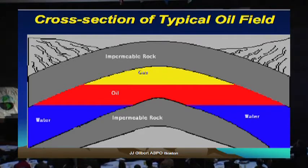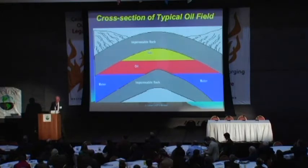The oil that's there has generally not been formed in the reservoir itself. It's been formed some distance away — 10, 20, maybe 50 miles away. It's formed from the decomposition of animal and vegetable matter deposited many millions of years ago. That organic matter decays, undergoes bacterial action, is heated basically by heat from the center of the earth or from radioactive decay.